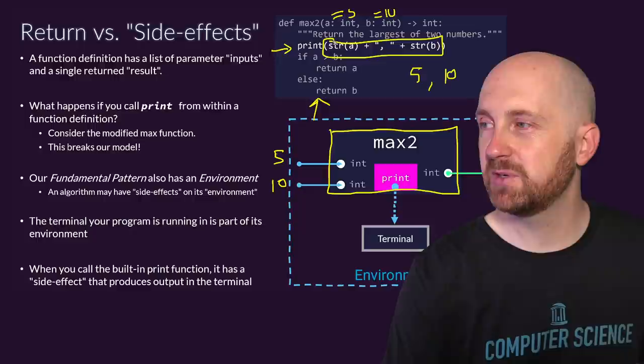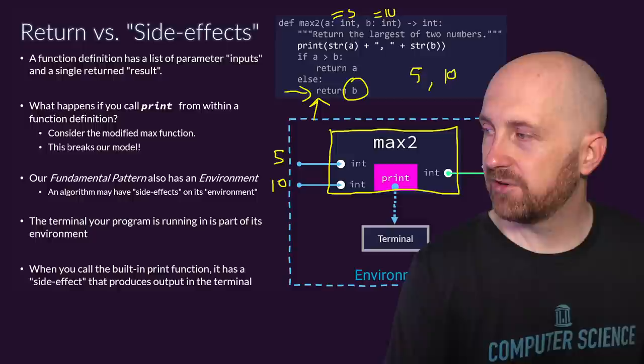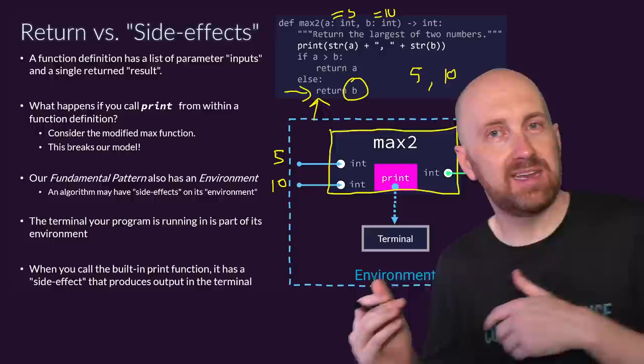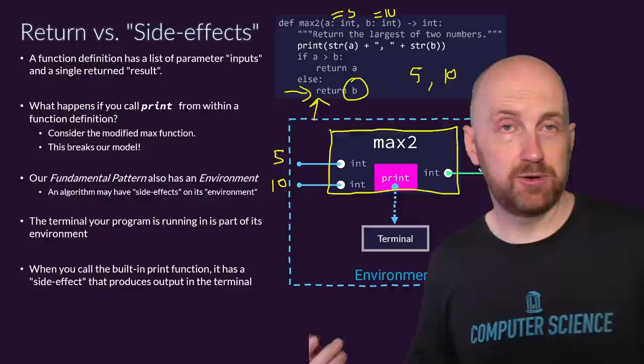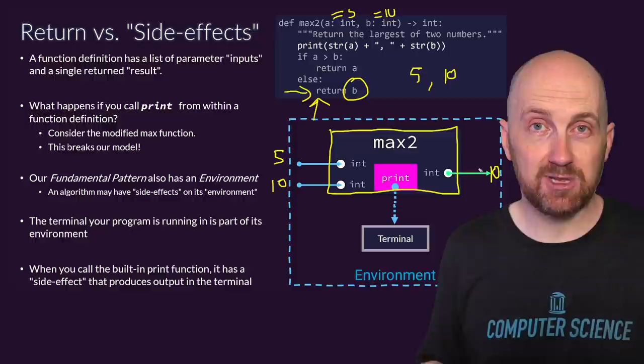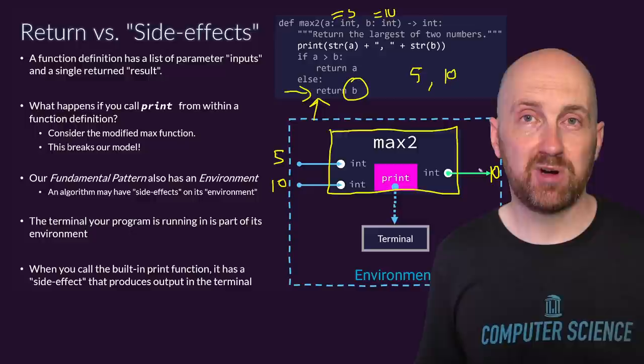If we continue on and ask: is a greater than b — is 5 greater than 10? That's false. We go to the else statement and return b. So b is 10, and this function call returns the value 10 back to somewhere else in our program where we can use that value. We're sending a meaningful piece of information — the result of this max2 function call, the max of 5 and 10, which is 10. When we call this function we want to use that expression and know it results in a meaningful value.